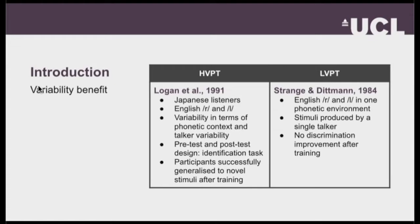They varied phonetic context and also talker variability. Phonetic context refers to the environment in which the target speech sounds occur, so R and L would be presented in different environments such as word-initial or word-final position. They also introduced variability in terms of talker, meaning the stimuli was produced by multiple speakers. They tested effectiveness using a pre-test and post-test design with a forced-choice identification task, and found that participants improved significantly in the post-test.